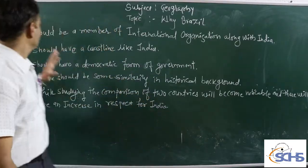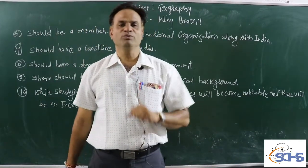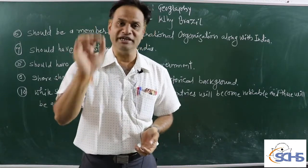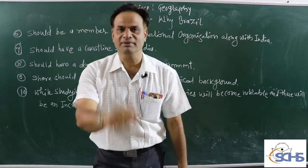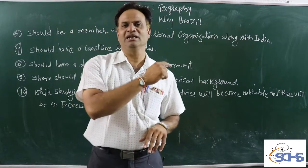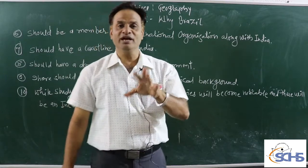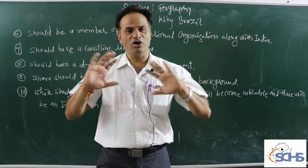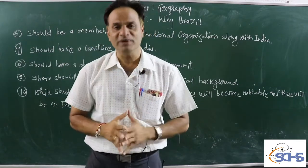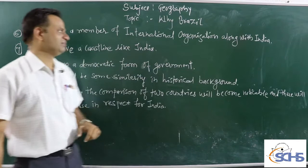Point number 6: the country should be a member of an international organization along with India. You will have studied BRICS in 9th standard. The first letter of BRICS is B, which stands for Brazil, and the I stands for India. That is why we need such a country — one that is in the same international organization as India. That is the main reason.